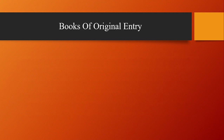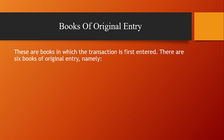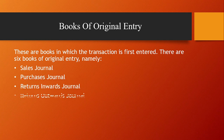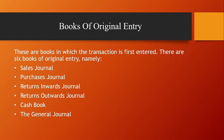When we talk about books of original entry, we have six. Many textbooks refer to seven books of original entry, which is also fine. We have the sales journal, the purchases journal, the returns inwards journal, the returns outwards journal, the cash book, and the general journal. The petty cash book is also seen as a book of original entry, but I teach the first six as the primary books of original entry.